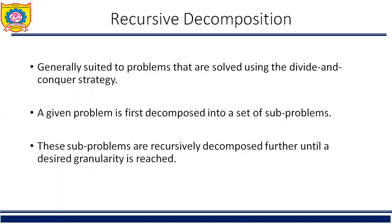Recursive decomposition is a method for inducing concurrency in problems that can be solved using the divide and conquer strategy. In this technique, a problem is solved by first dividing it into a set of independent subproblems. Each subproblem is solved by recursively applying a similar division into smaller subproblems, followed by a combination of their results. The divide and conquer strategy results in natural concurrency as different subproblems can be solved concurrently.